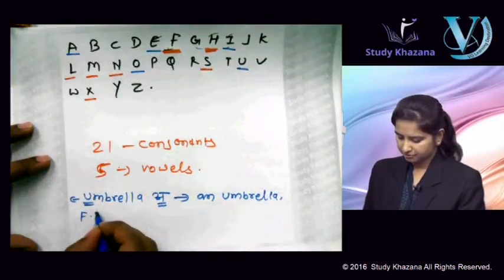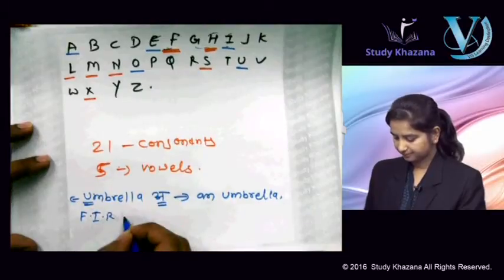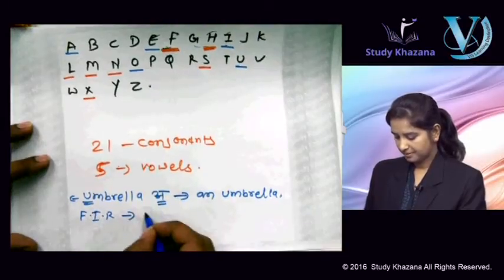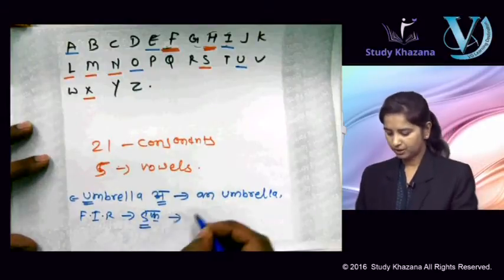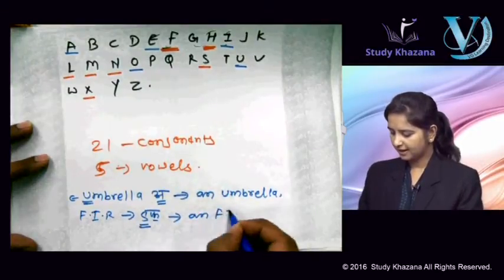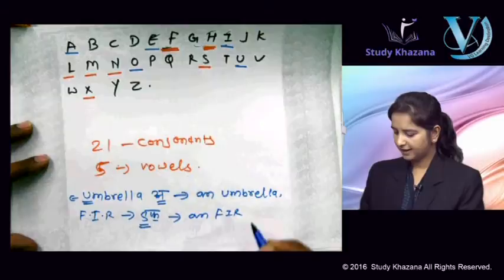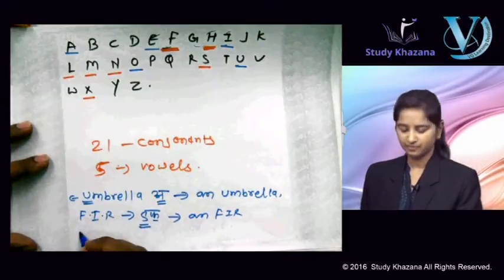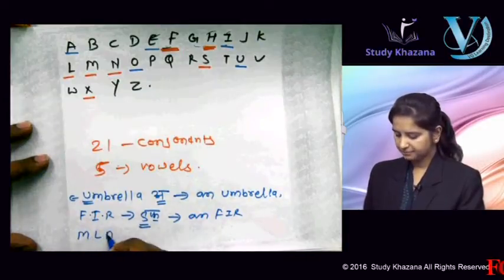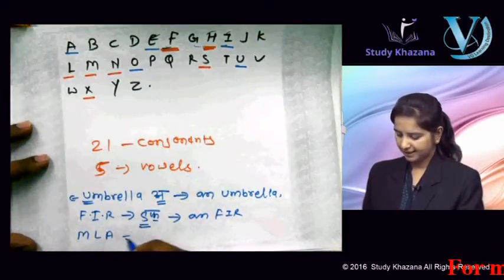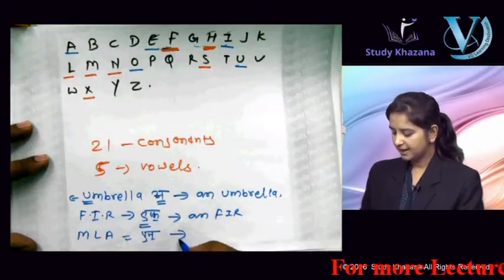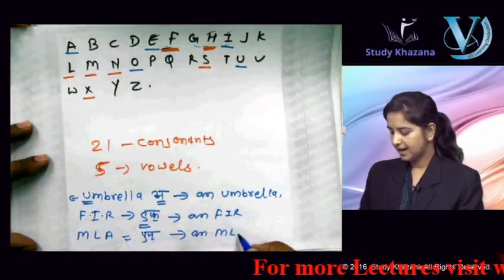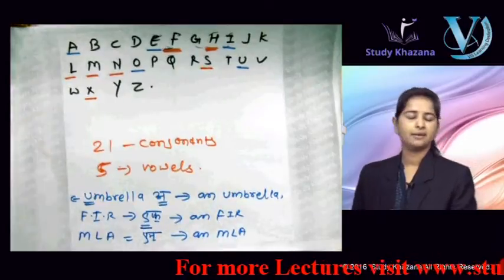If you say 'FIR' — the pronunciation starts with 'ef' (vowel sound), aur isliye hum kahenge 'an FIR.' If we talk about 'MLA' — pronunciation is 'em' (vowel sound), and it will be 'an MLA.'